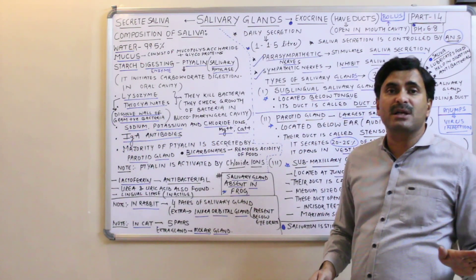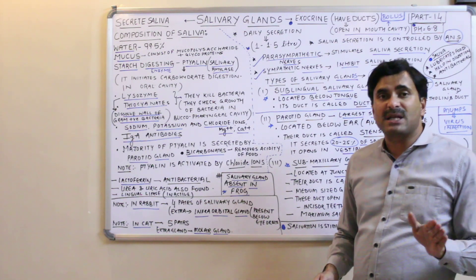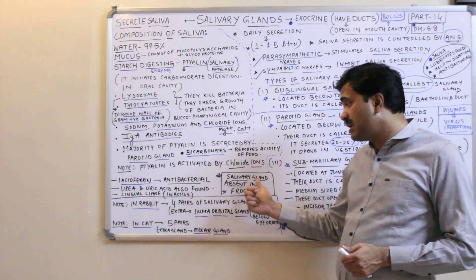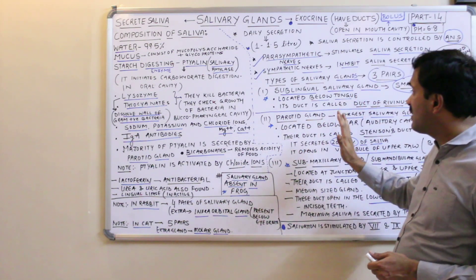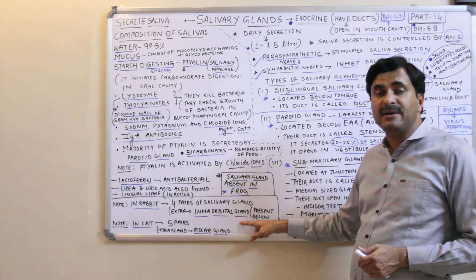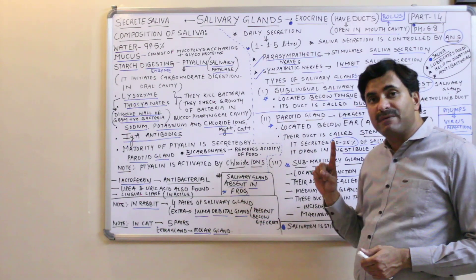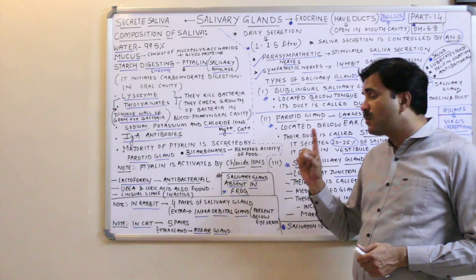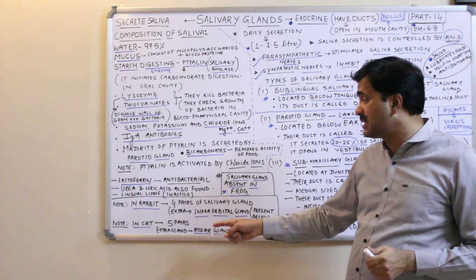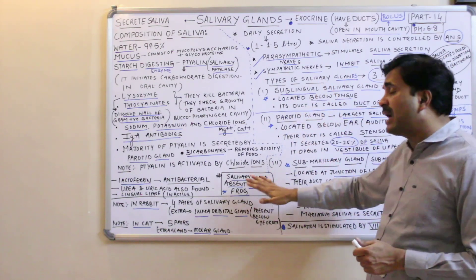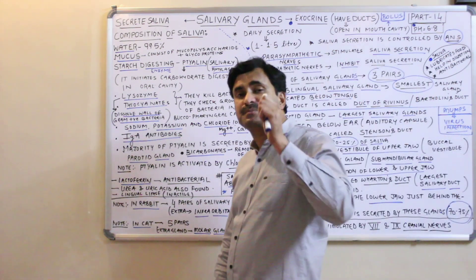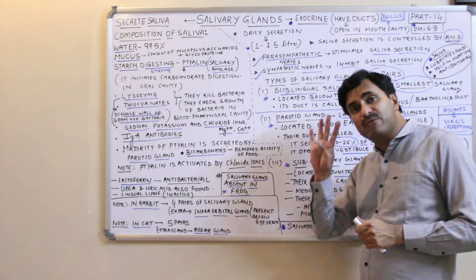Not all organisms have the same number of salivary gland pairs. In rabbit, which is also a mammal, there are four pairs of salivary glands — the three standard pairs (sublingual, parotid, submaxillary) plus an additional infraorbital gland, located below the eye orbit. In cat, there are five pairs — the four pairs plus a molar gland.